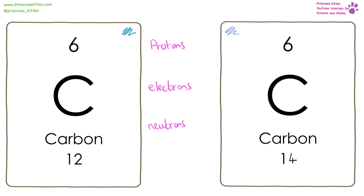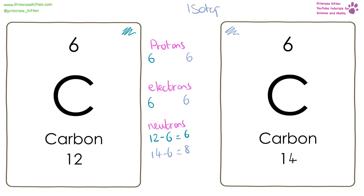Here we have two isotopes of carbon. You can see they have the same atomic number — 6 — but different mass numbers. Each of them has 6 protons and 6 electrons, but one has 12 − 6 = 6 neutrons, and the other has 14 − 6 = 8 neutrons. An isotope is an atom that has a different number of neutrons.